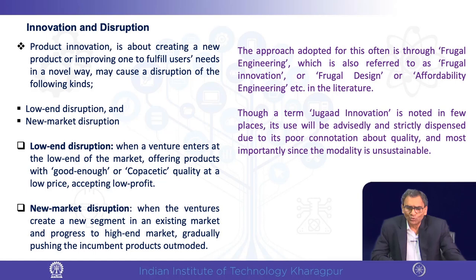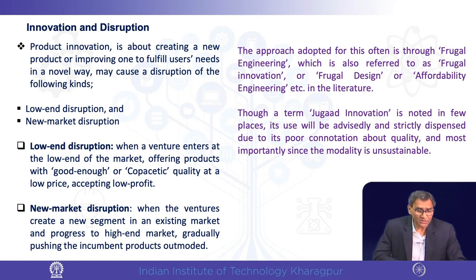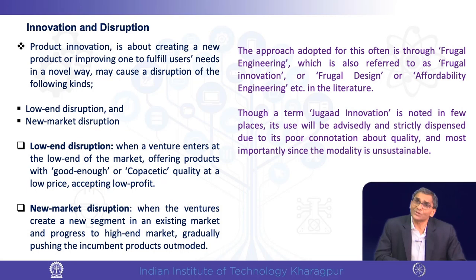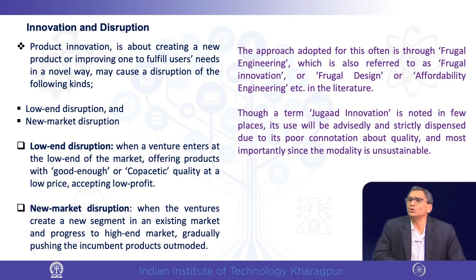There are two kinds of disruption. One is low-end disruption, where a venture enters at the low end of the market offering products with good-enough quality that satisfies the need. For example, staying in a budget hotel instead of a seven-star hotel, or budget airlines where you only pay for flying and purchase food separately — these are frugal models.